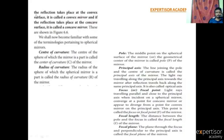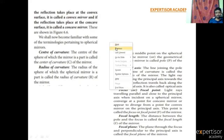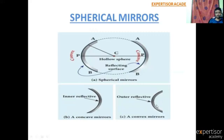When the reflection takes place at the convex surface, it is called a Convex Mirror. When the reflection takes place at the concave surface, it is called a Concave Mirror.